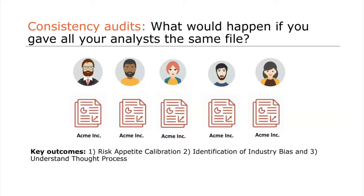This is probably one of the best things you can do internally. Every now and then, do a consistency audit to make sure everyone is on the same page — that Mike or John aren't reviewing loans based on things that happened 20 years ago in their experience, but based on the risk appetite set by your board and directors.